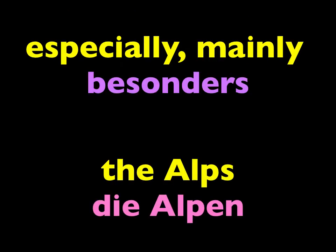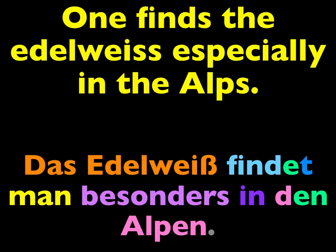Repeat these expressions: besonders. Die Alpen. Notice it's plural, just like it is in English. So repeat this: Das Edelweiß findet man besonders in den Alpen. Notice at the end of the sentence I have the dative case — the dative case plural — 'die' becoming 'den' because of the word 'in'.